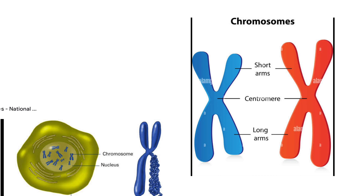In the previous slide you saw tangled hair-like structures called chromatin, but here, look inside the nucleus — there is no chromatin. Instead, it becomes arranged in a classical or standard form. That standard form of chromatin is called chromosomes. Only at the time of cell division can we see chromosomes.